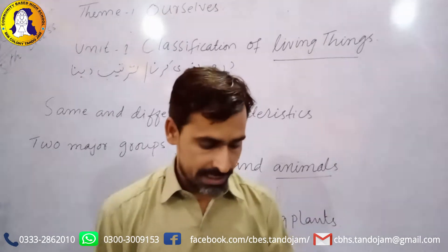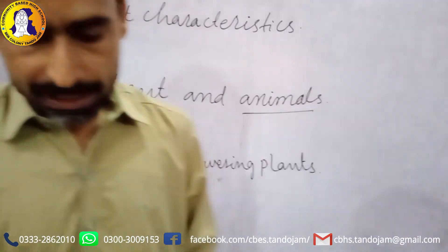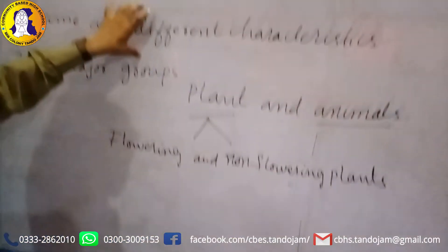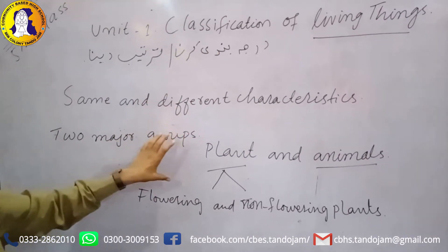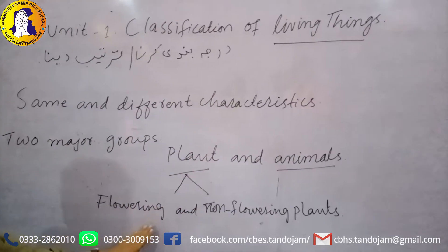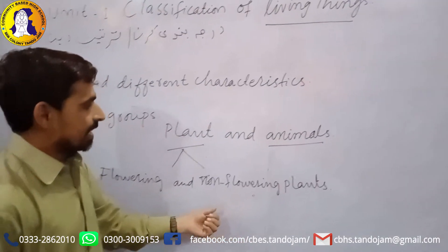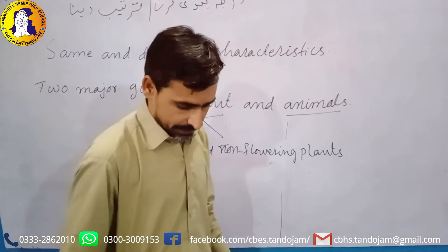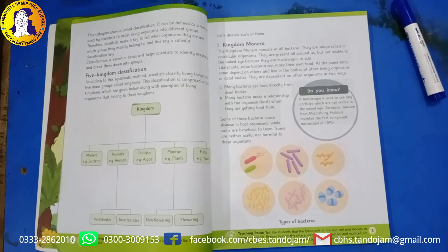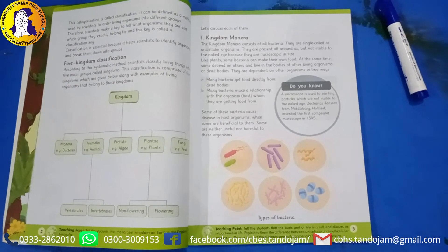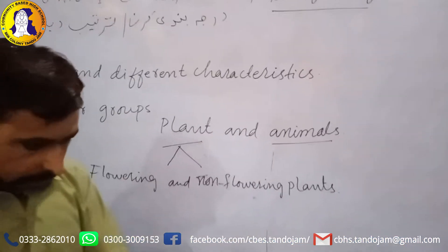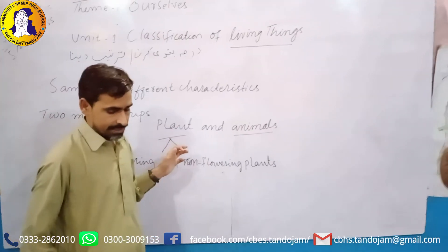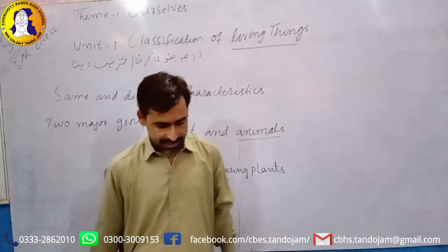If you see on page number 2, this categorization is called classification. It can be defined as a method used by scientists to sort living things into different groups. Scientists make a key to identify what reason they belong to a group, and this key is called the classification key.